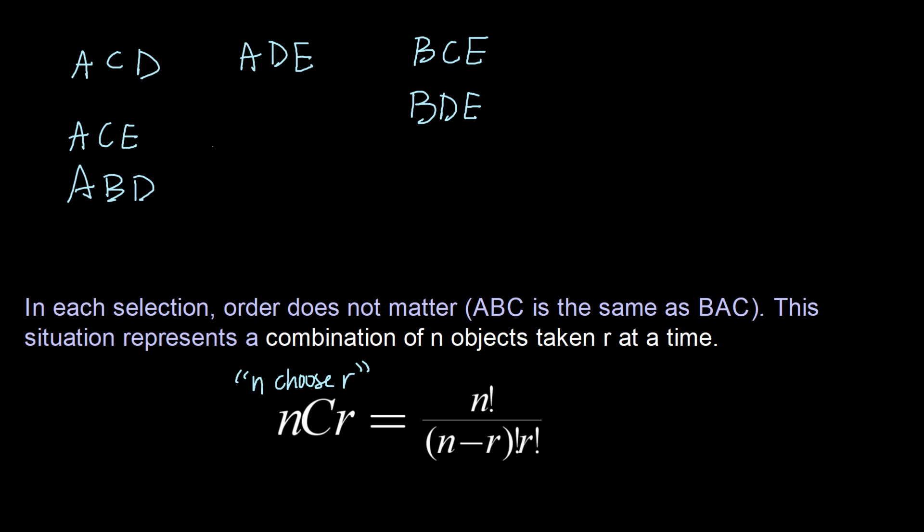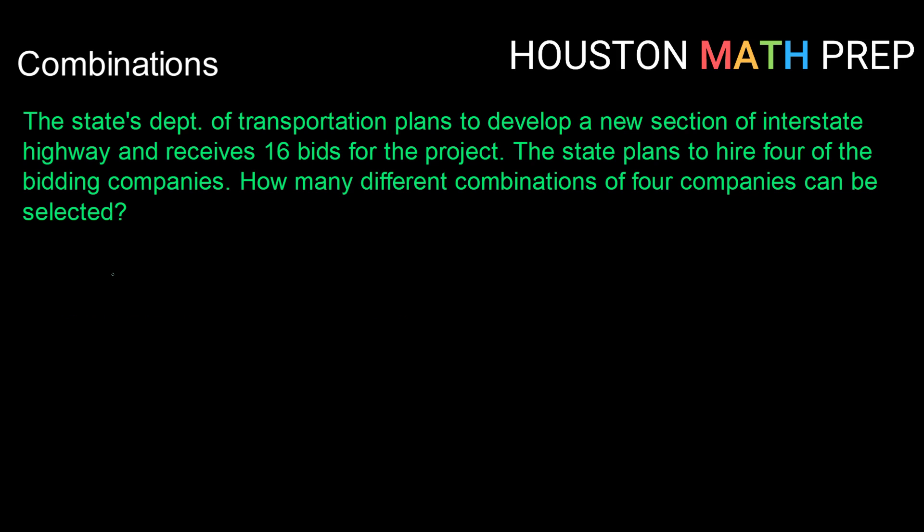So let's take an example using that. Let's say the state's Department of Transportation plans to develop a new section of Interstate Highway and receives 16 bids for the project. The state plans to hire four of the bidding companies. How many different combinations of four companies can be selected?